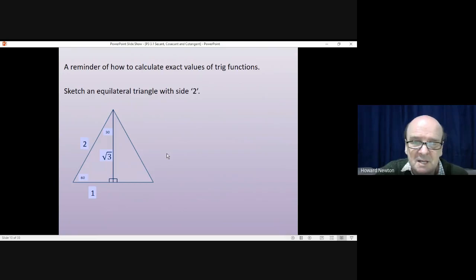Then we can work out sine, cos, and tan in the normal way. Sine of 30 is opposite over hypotenuse, which is a half. Cosec is 1 divided by that. 1 divided by a half is 2.